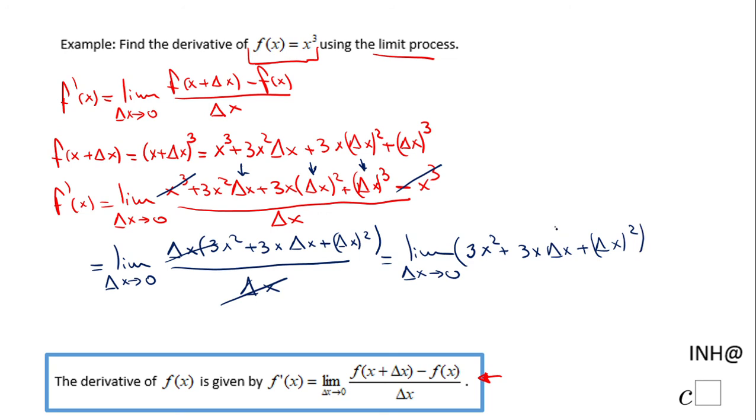But now let's see what happens with this limit when Δx approaches zero. This approaches zero, which means this product will be zero. And obviously, if this is zero, zero squared will be zero. So the only thing left here is going to be 3x².